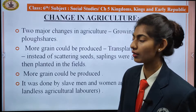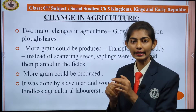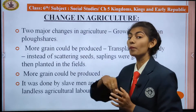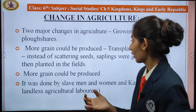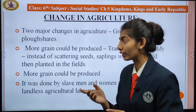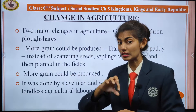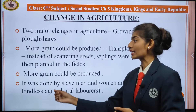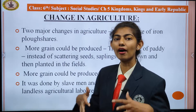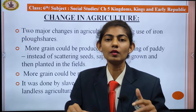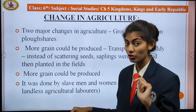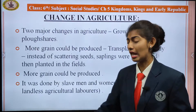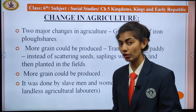Next is change in agriculture. There were two major changes. First was the growing use of iron ploughshares, which meant more grains could be produced. Second was the transplanting of paddy — instead of scattering seeds, saplings were grown and then planted in the fields, which increased yields. This agricultural work was done by slaves — men or women — as well as landless agricultural laborers.